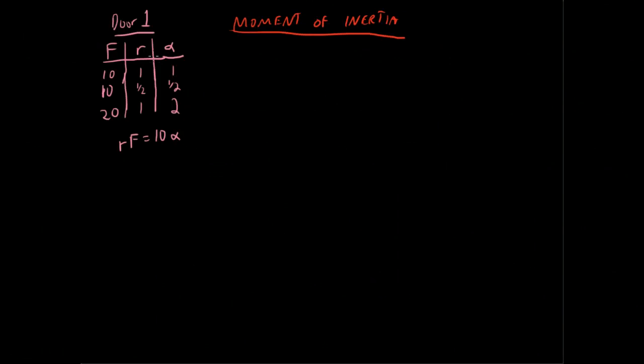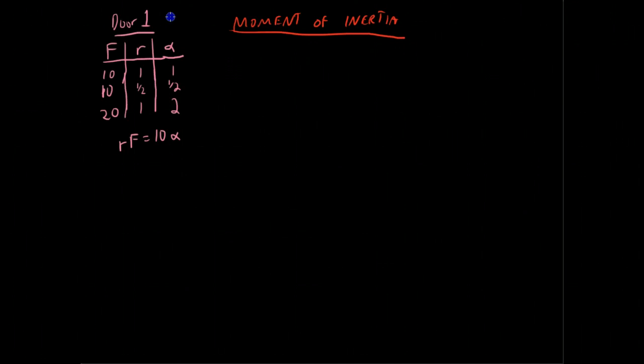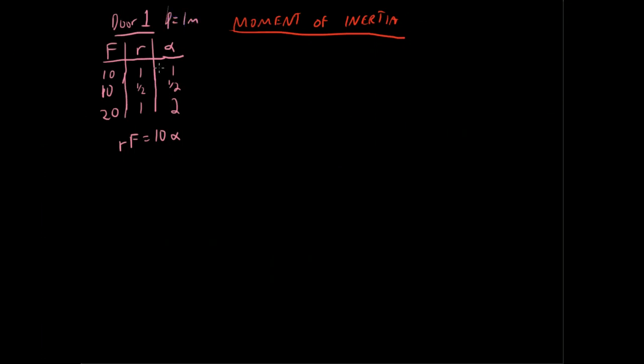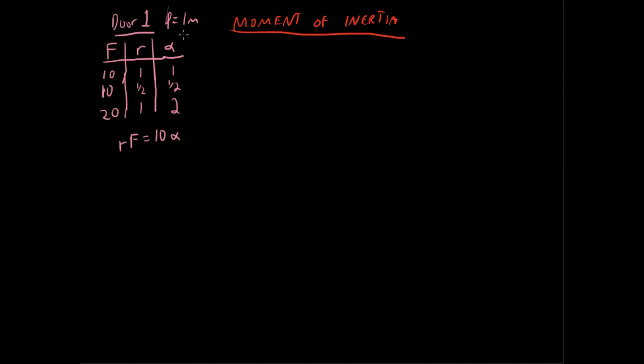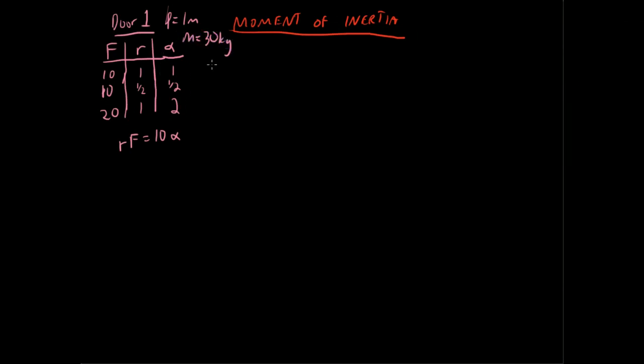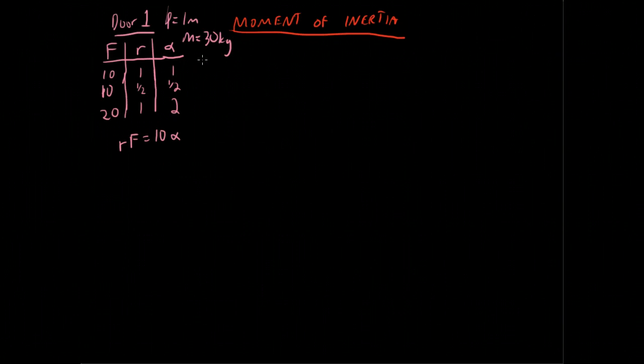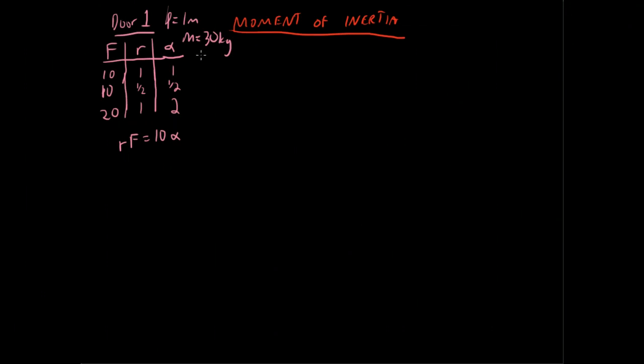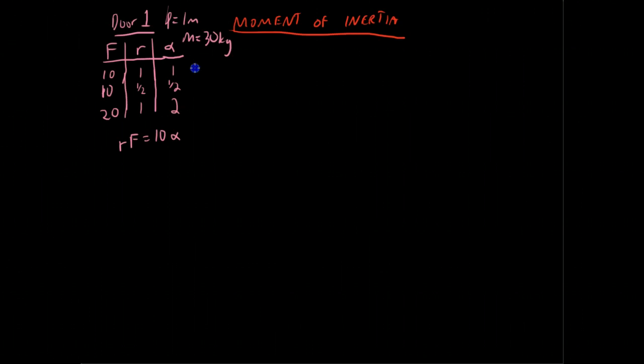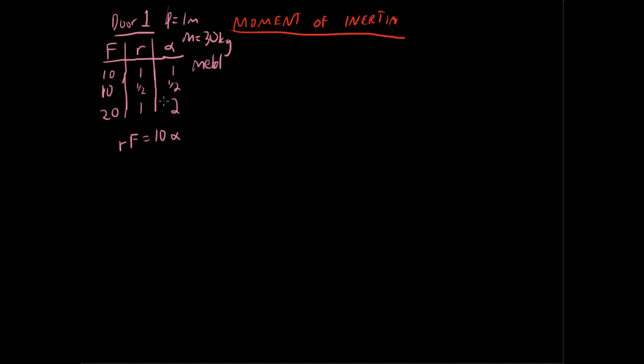Okay, in the previous lecture we had looked at a door, and that door had a length, let's just say this had a characteristic length of one meter. I'm also going to give us a little bit more information and say that it also had a mass of 30 kilograms. Let's just say it was a nice solid metal door, and we had a 30 kilogram mass, a length of one meter, and these were the parameters we got out.